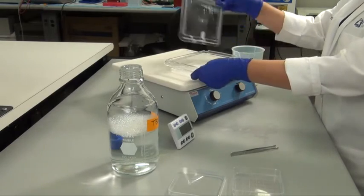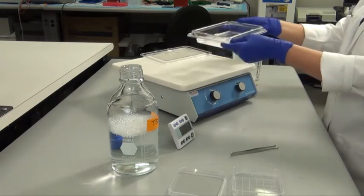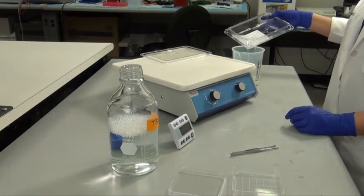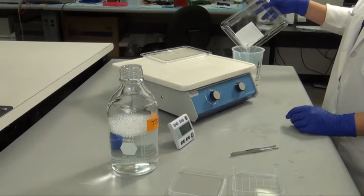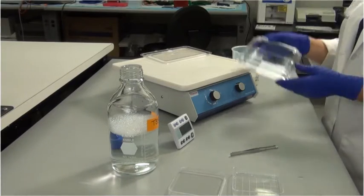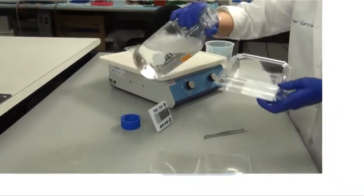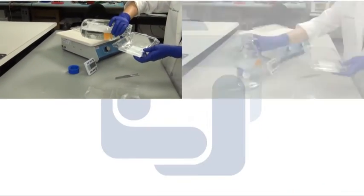The next day, decant off the primary antibody and wash the membrane with large volumes of TBS tween and vigorous agitation five times for five minutes each. These stringent washes are extremely important for reducing nonspecific background signals.